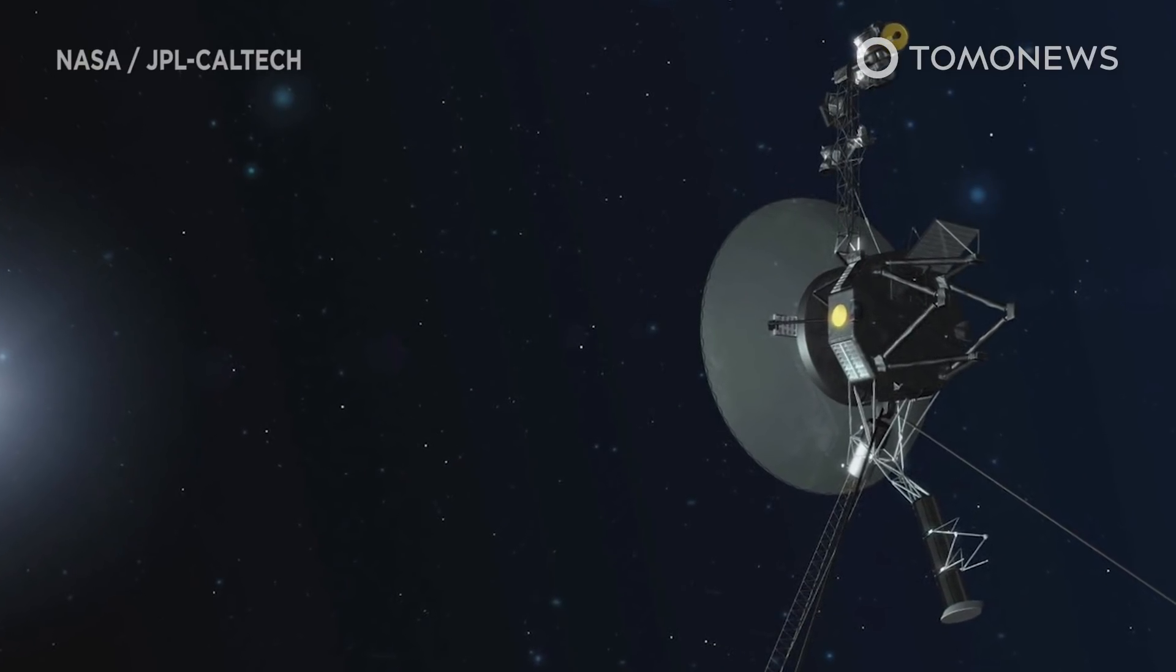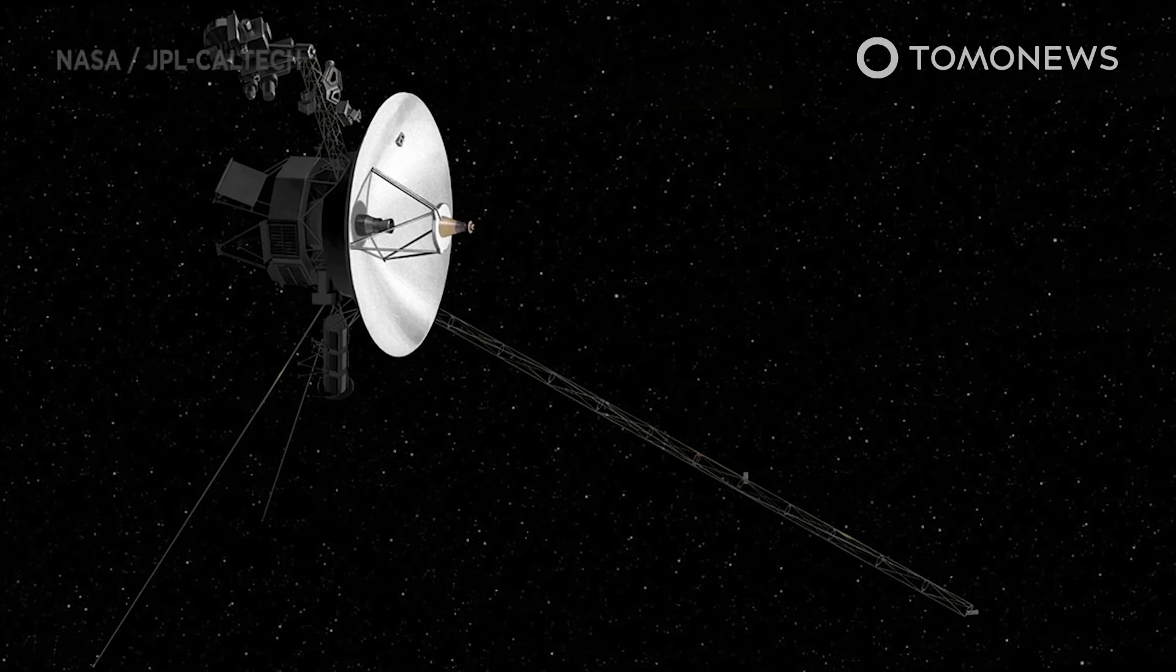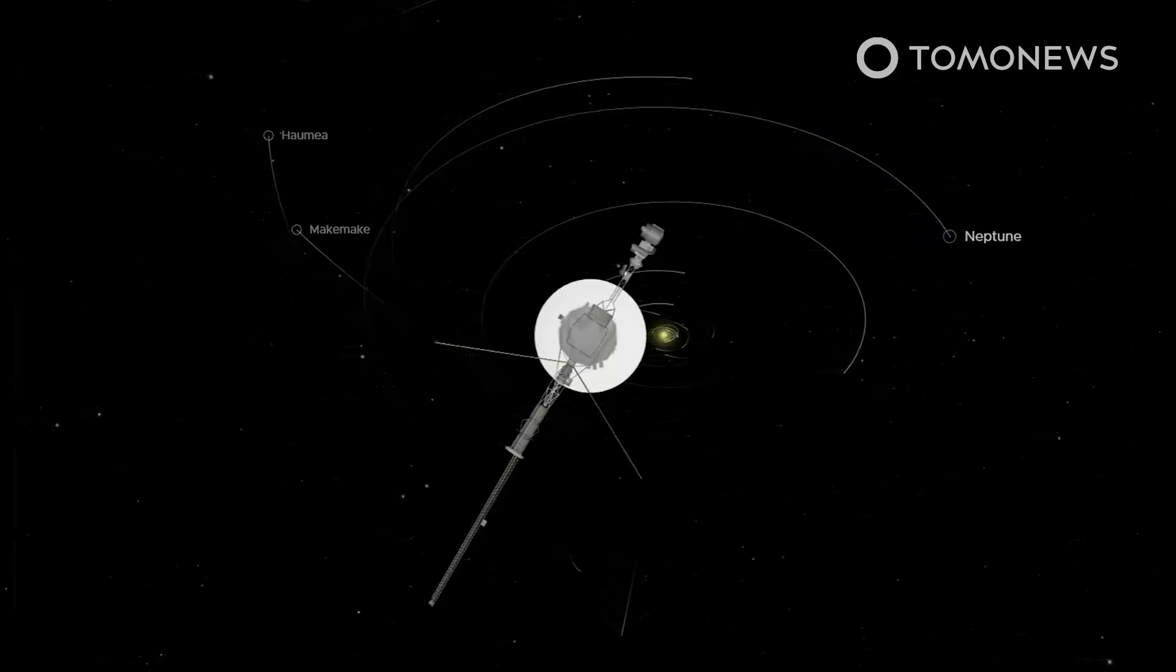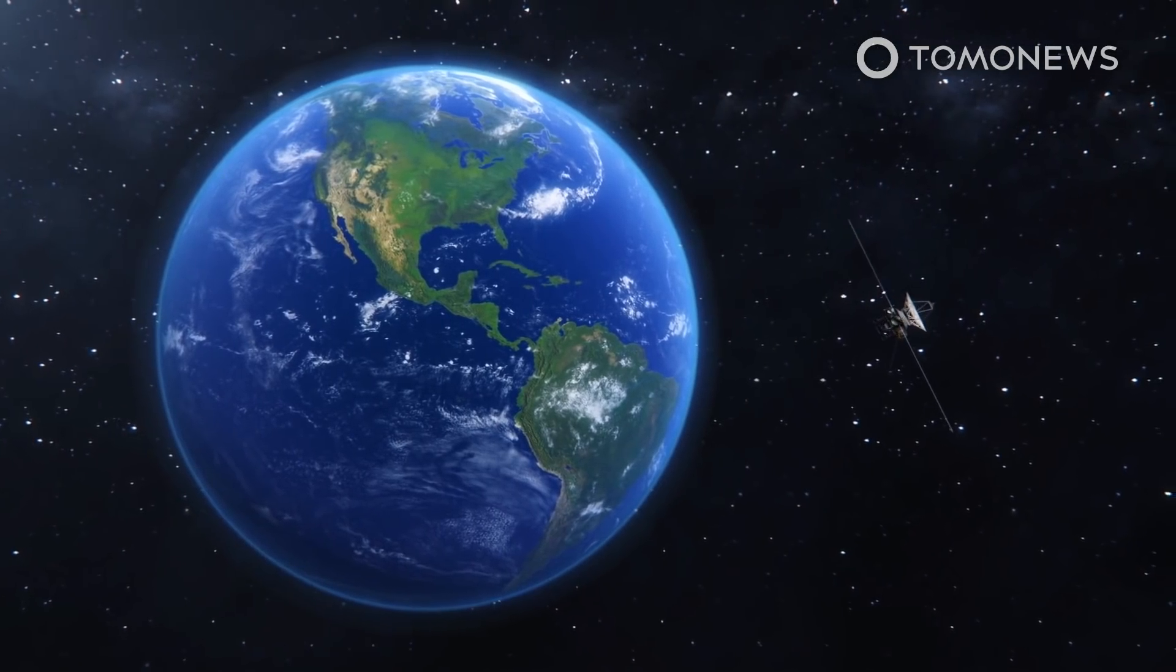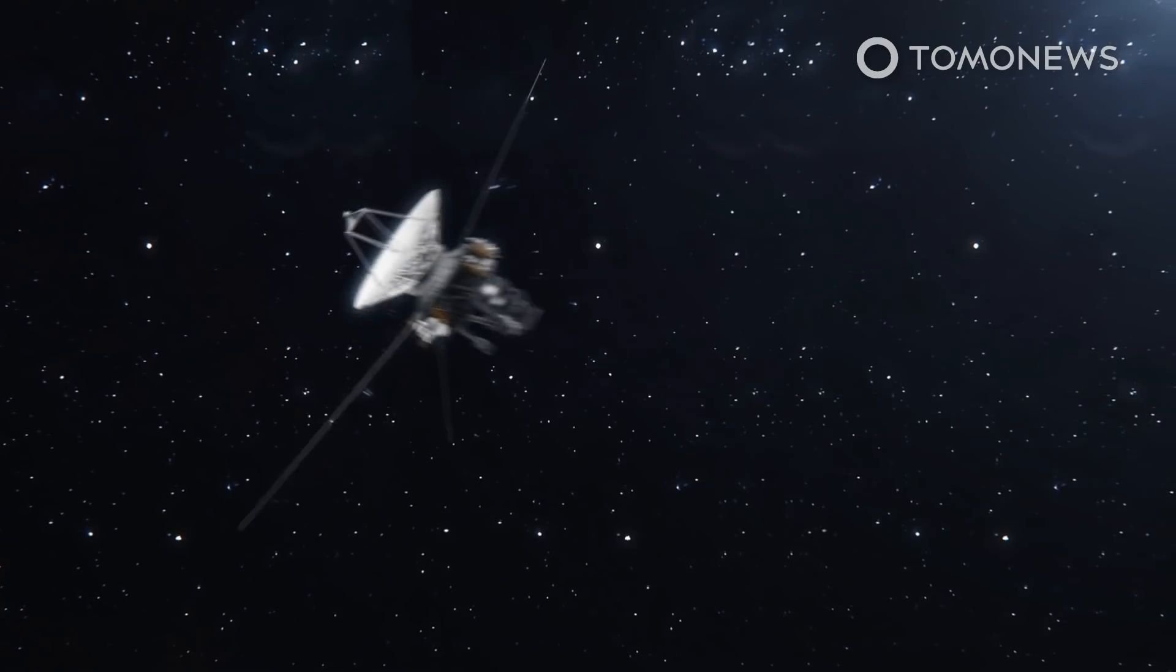The Voyager spacecraft have found that space is more dense outside the solar system. Here is what you need to know. NASA's Voyager 2 crossed into interstellar space in November of 2018 after a 41-year voyage, but its mission is far from over.